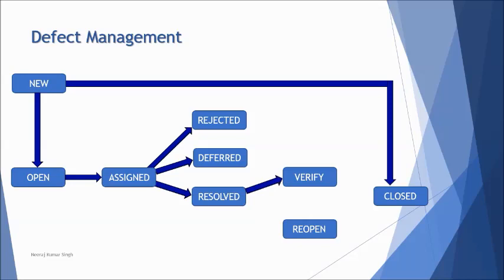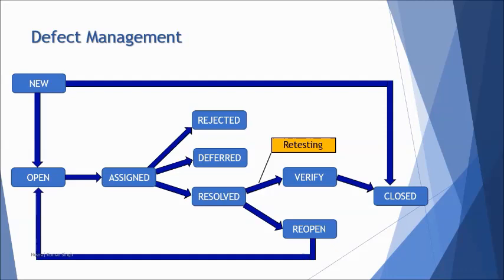Once resolved, the tester has the responsibility to conduct retesting, also known as confirmation testing — re-running the same test case that revealed the defect. If retesting passes, it means the defect has been resolved and verified. The test manager cross-checks and marks it as 'Closed.' However, if retesting fails, the defect is marked as 'Reopen,' goes back to 'Open,' and is reassigned to the developer.